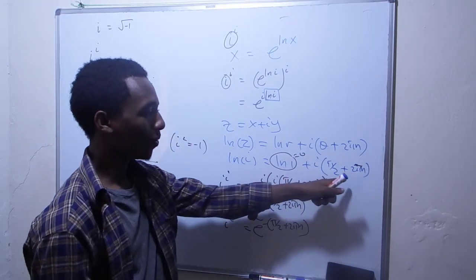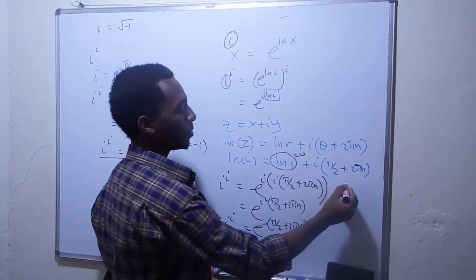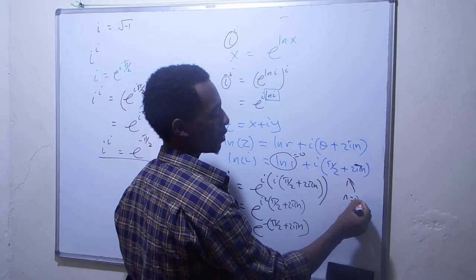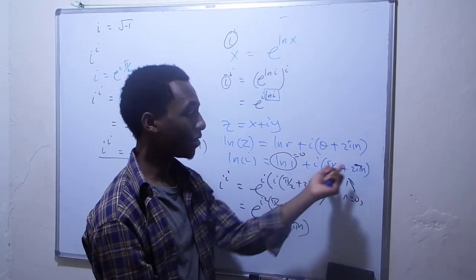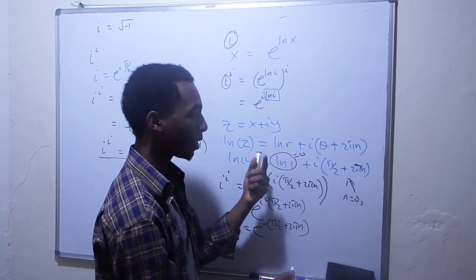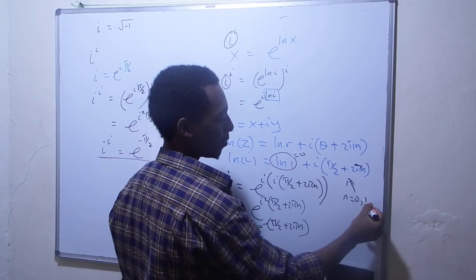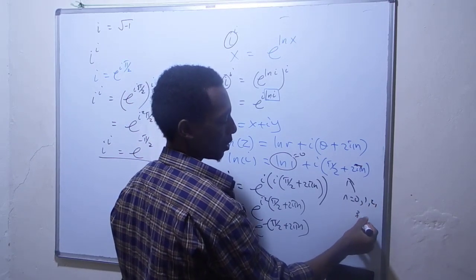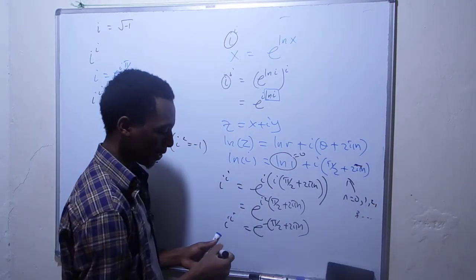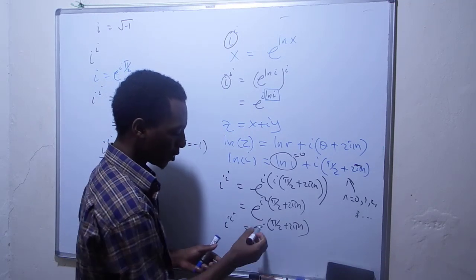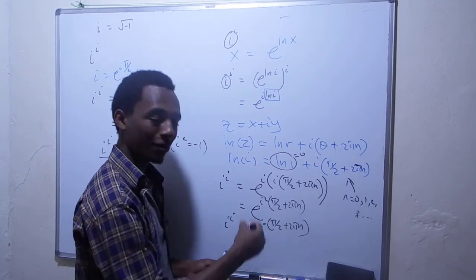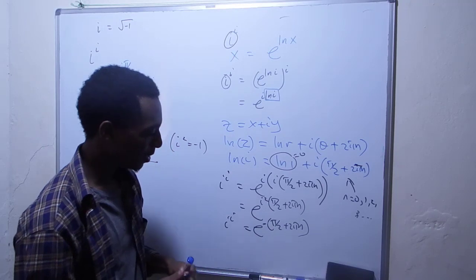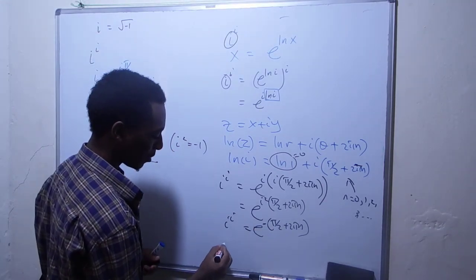I should mention that in this formula, n equals 0, 1, 2, 3, and so on. When n is 0, we have the principal argument. To get more solutions, you just plug in different values of n, and that's how we get all the solutions.